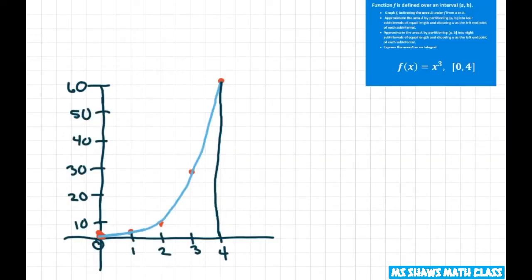I went ahead and graphed x cubed from 0 to 4. So let's go ahead and partition it first to four intervals. So basically you're taking 4 minus 0 divided by 4. That gives you 1. So we're going by 1's here and we're using the left endpoint. That means we have 5 endpoints here and we're going to start with the left because we only need 4 endpoints.